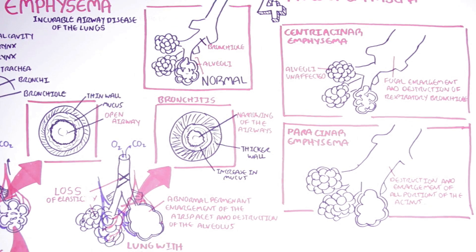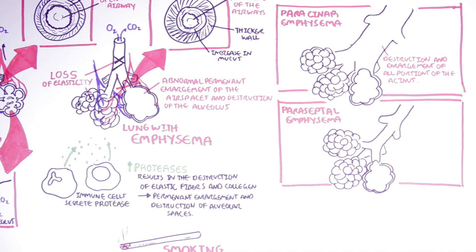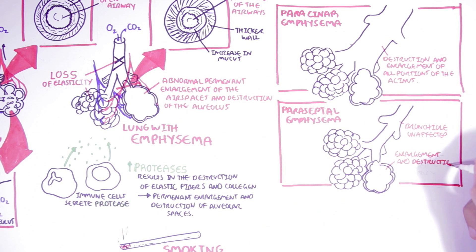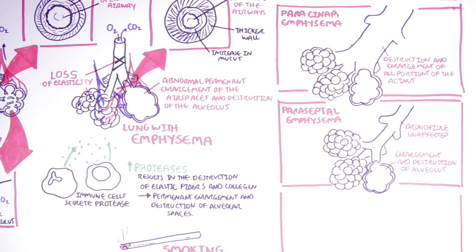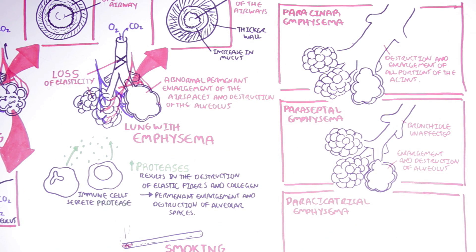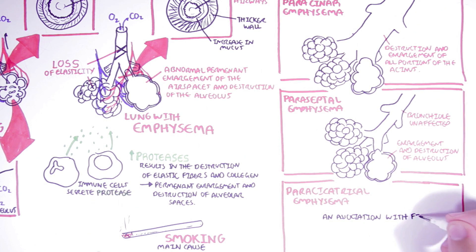The third type is paraseptal emphysema, where the bronchioles are unaffected but there is enlargement of air spaces and destruction of the alveoli. The fourth type is paracicatricial emphysema, also called irregular emphysema, which is often seen in individuals with inflammatory conditions and is mostly associated with scarring of the tissues and fibrosis.